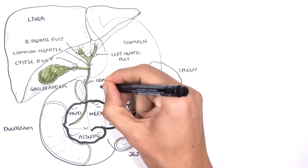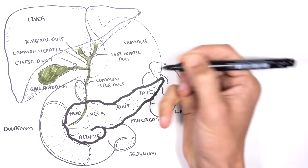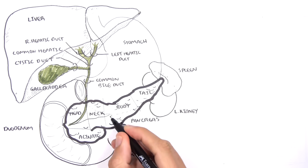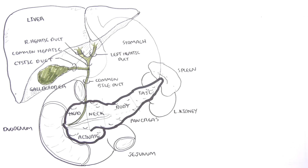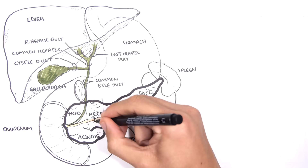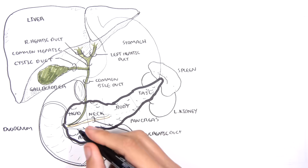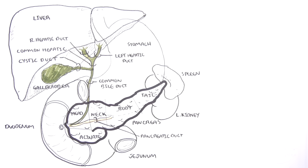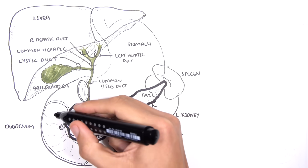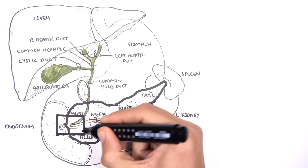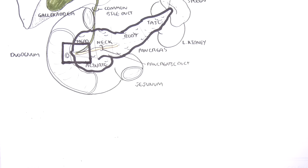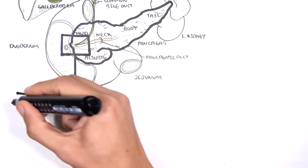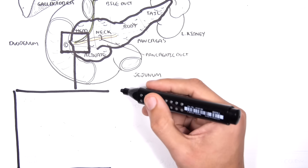The cystic duct joins with the common hepatic duct to form the common bile duct. The common bile duct then joins with the main pancreatic duct before entering into the small intestine, the duodenum.